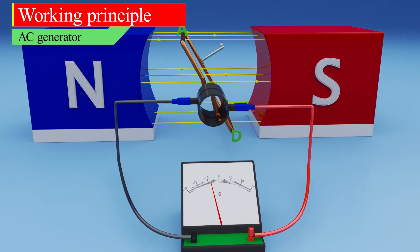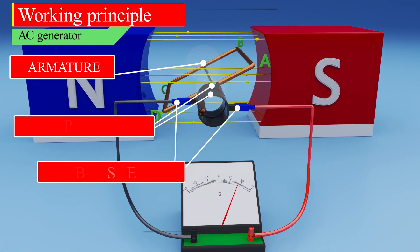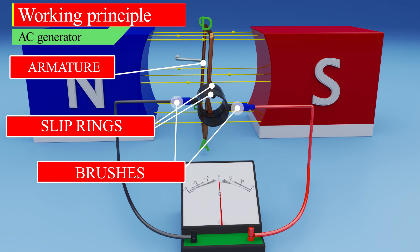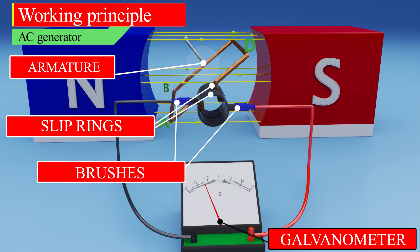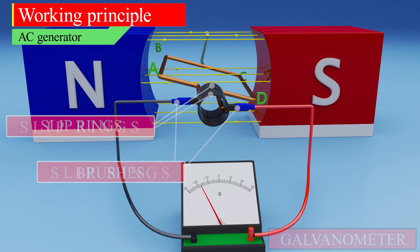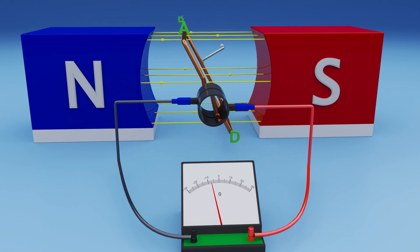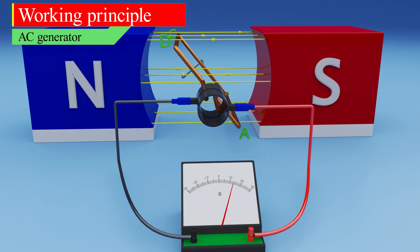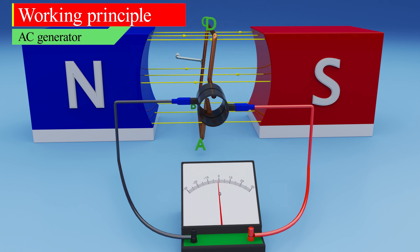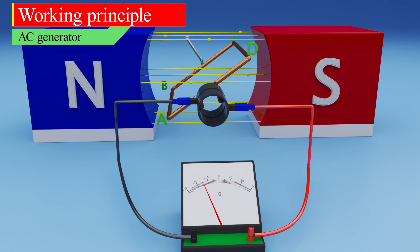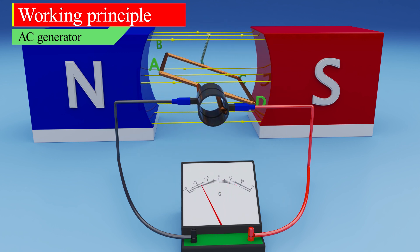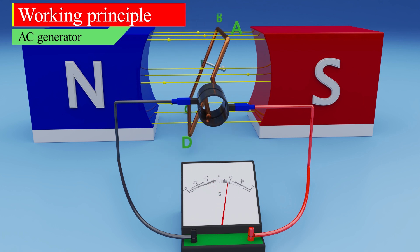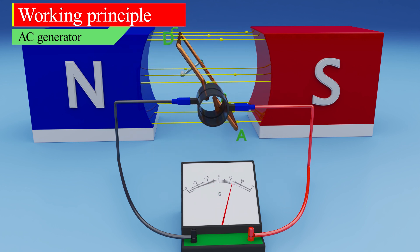In fact, the current flows through the armature, slip rings, brushes, and through the galvanometer, in which we have a response. As you can see, the galvanometer needle swings between negative and positive values, which means that alternating current passes through the galvanometer.